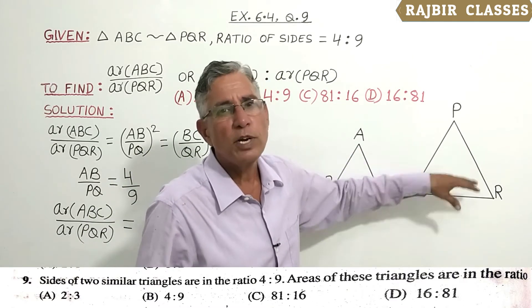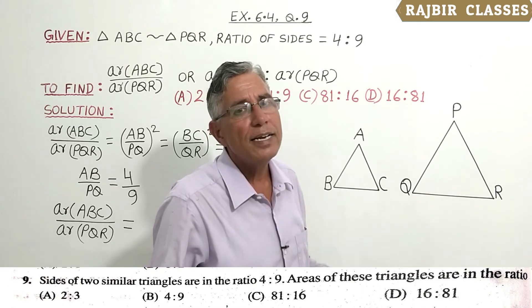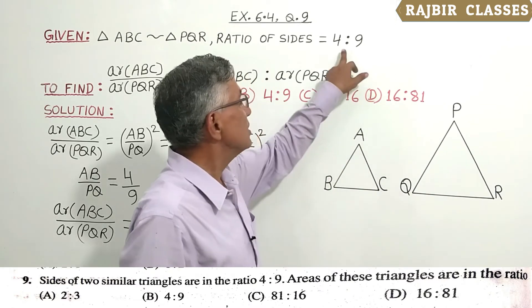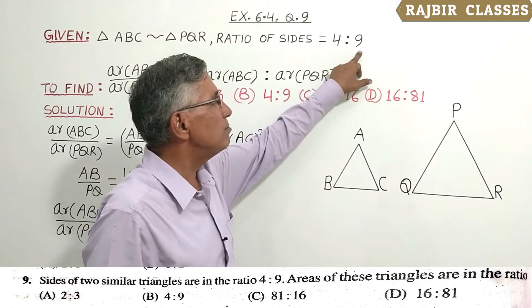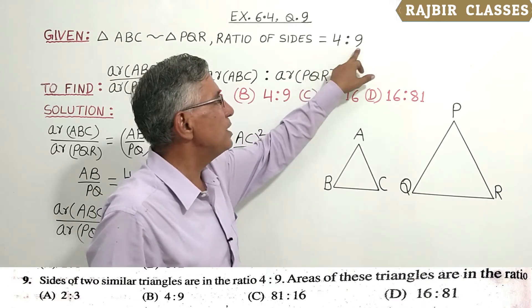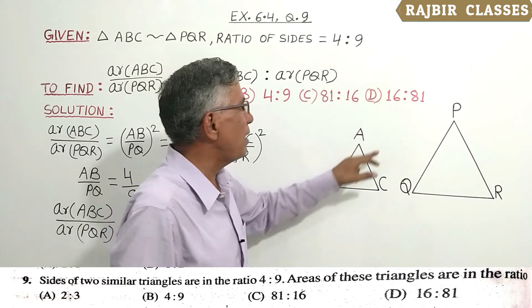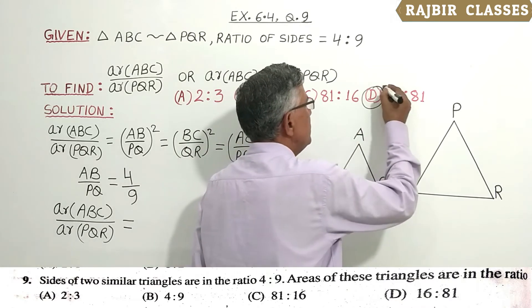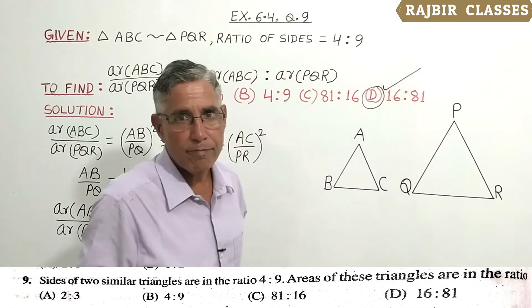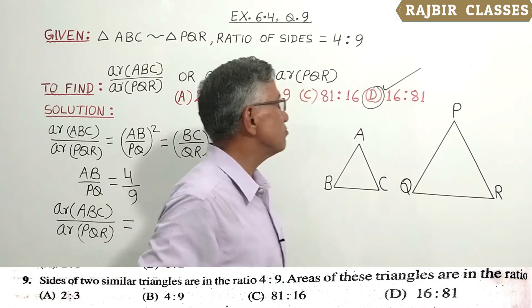The ratio of the areas is the square of the ratio of the sides. The ratio of the sides is 4:9. So, 4 squared is 16, 9 squared is 81. So this is the ratio of the areas.